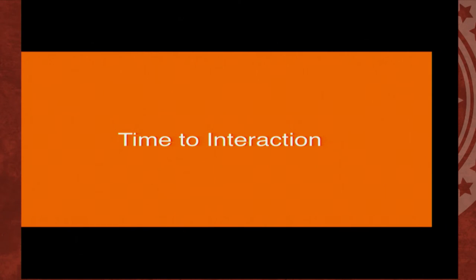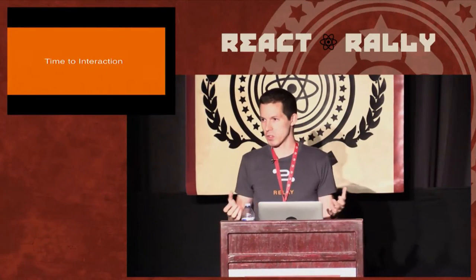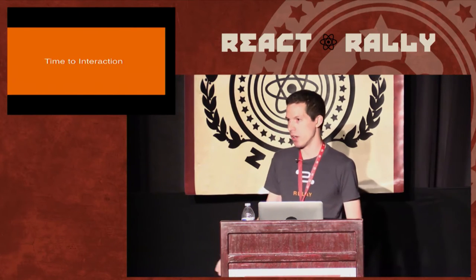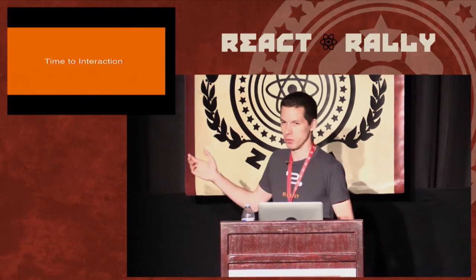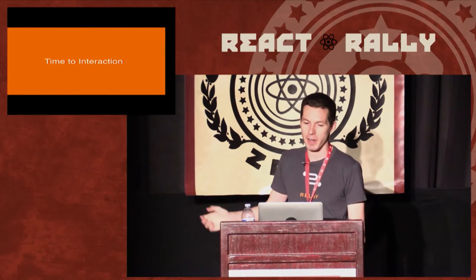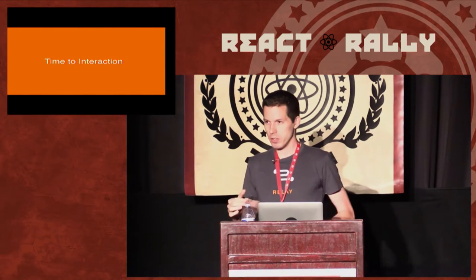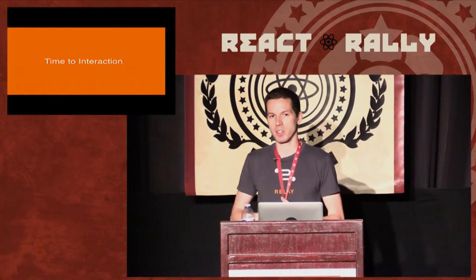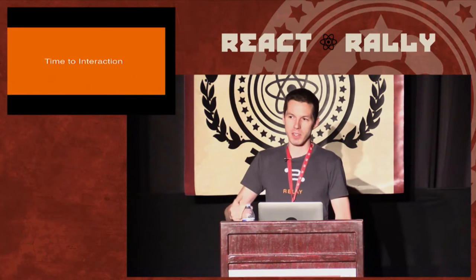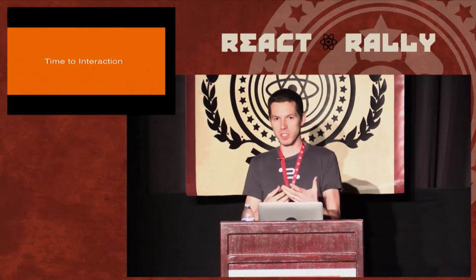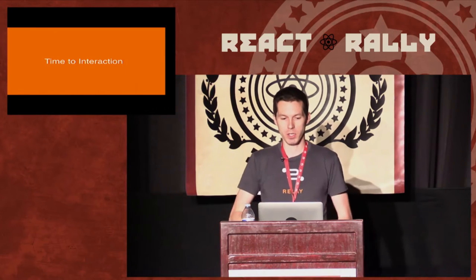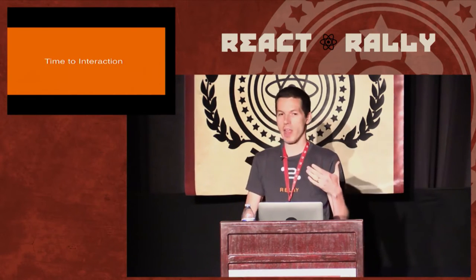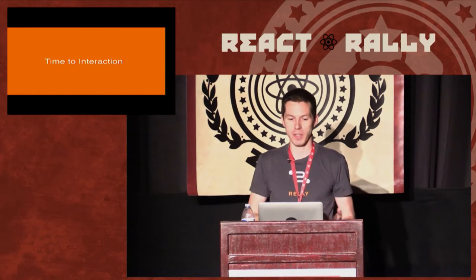Relay 2 is the best parts of Relay today. We're keeping co-located GraphQL and React components because it makes applications easier to reason about, and we're keeping the declarative API because that lets product developers focus on their product and not on repetitive data-fetching logic. As I talk about Relay 2, the metric we care a lot about is what we call time-to-interaction — TTI — the time from when an application starts or a transition begins until we can see new content and interact with it. For the Facebook news feed, that's when the first story loads and I can actually like, share, or comment on it.